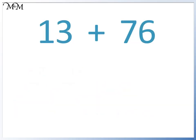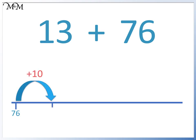Here is 13 plus 76. 76 is the biggest number, so we start with 76. We add 1 jump of 10 to get to 86. And then 3 jumps of 1. We have 87, 88, 89.